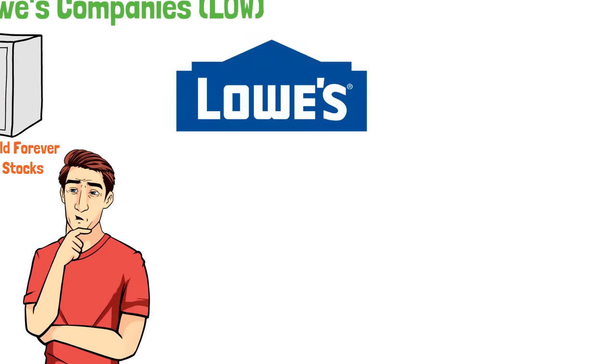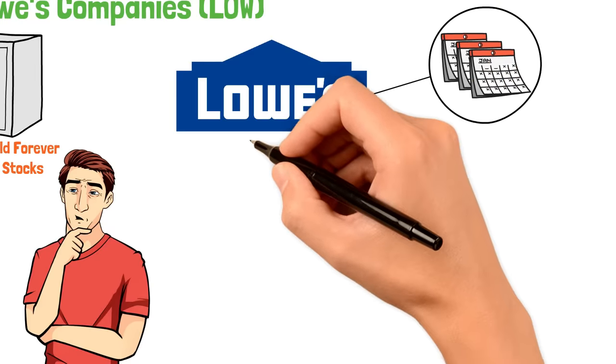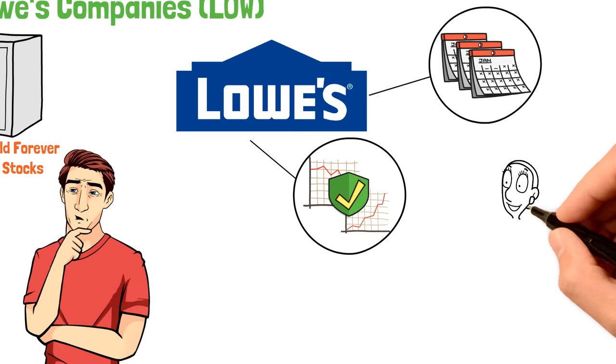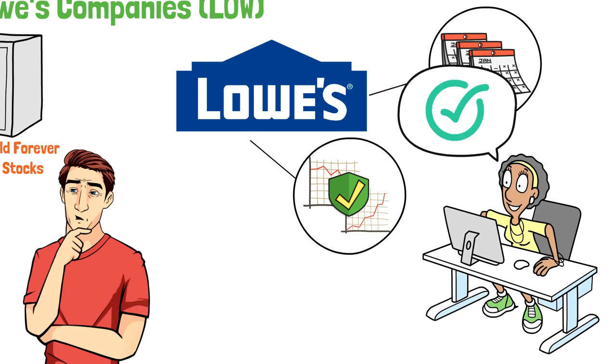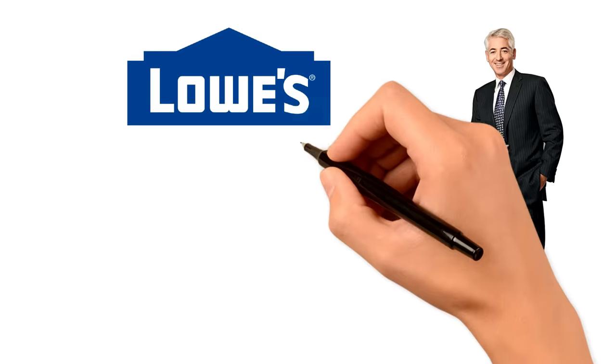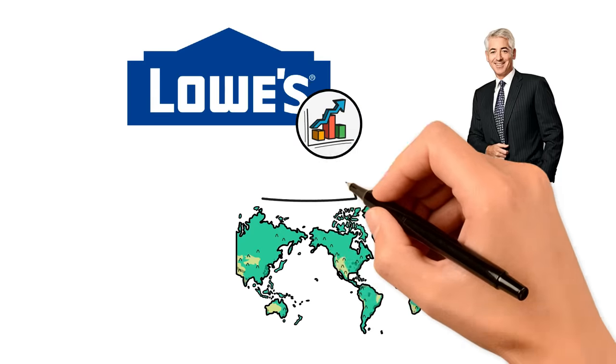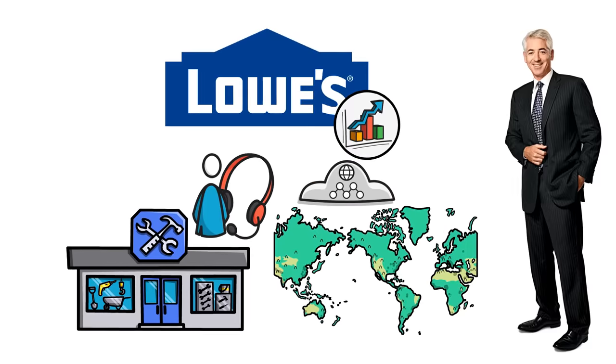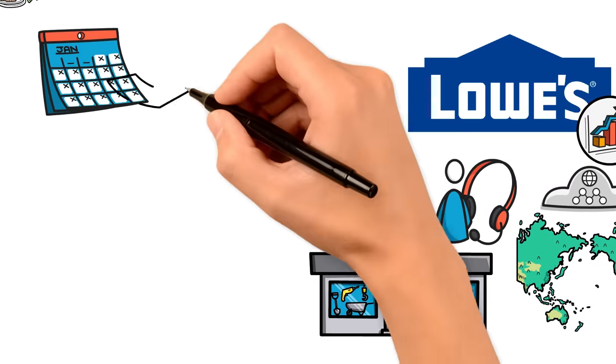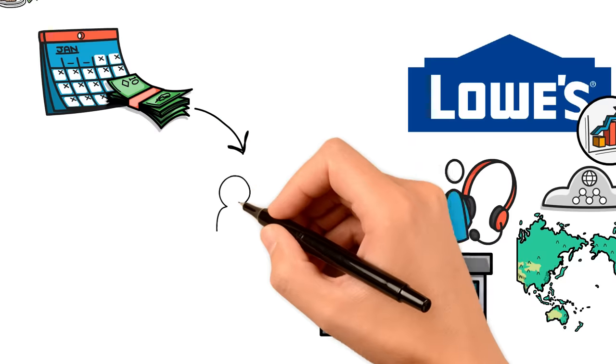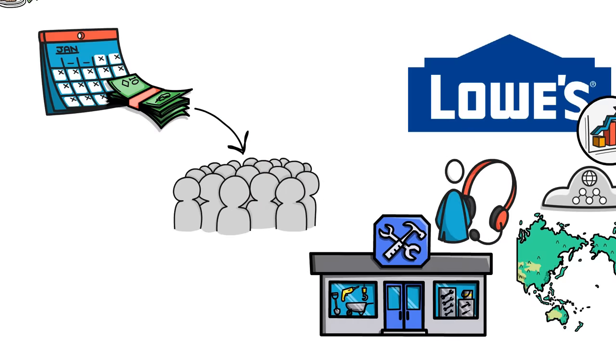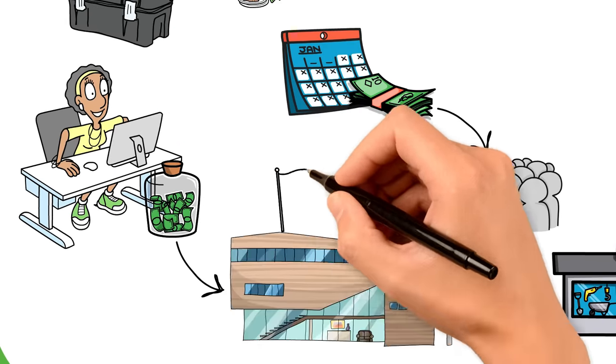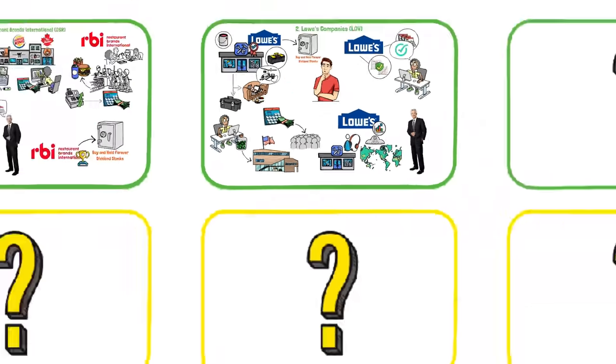But here's where it gets interesting for us as investors. Lowe's has been around the block, and they know their business inside and out. They've weathered economic ups and downs, adapting and growing through them all. This resilience is exactly what you want in a company when you're thinking about long-term investments and dividends. Ackman sees Lowe's as a company that's not just surviving, but thriving. They're expanding their services, embracing online sales, and enhancing the customer experience both in-store and digitally. This forward-thinking approach is key to staying relevant in a competitive market. Let's talk dividends. Lowe's has a history of rewarding its shareholders, and with their continuous growth and solid market position, the future looks promising for dividend seekers. Investing in Lowe's, according to Ackman's philosophy, is like investing in a piece of the American dream, the constant pursuit of a better, more comfortable home.